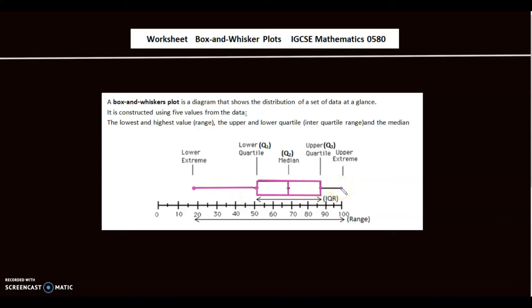So whatever set of data this box and whisker plot has been generated from has a lower value around 18, upper value of 100, median of around 68, lower quartile of 51, and upper quartile of 86 roughly. From these five values you make your box and whiskers plot.